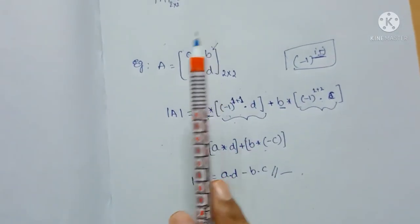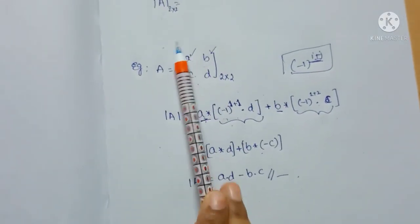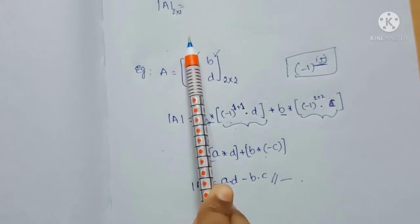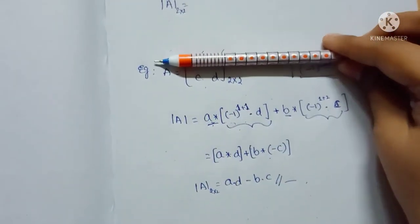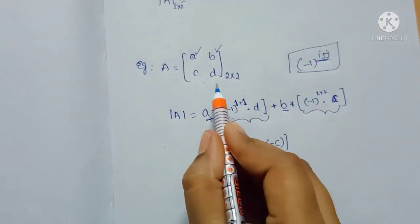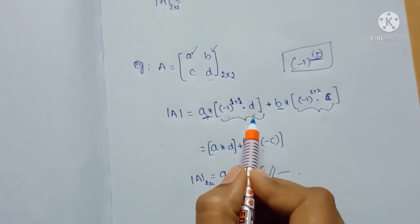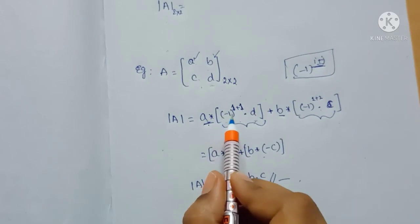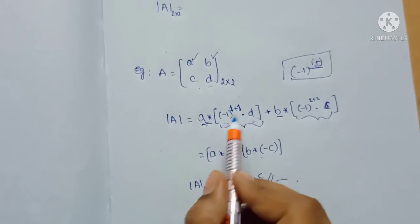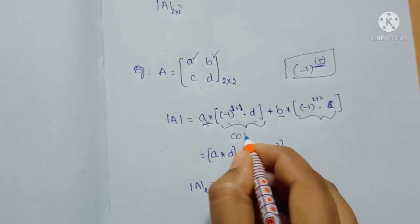If you close that corresponding column and corresponding row, then the remaining element D is the minor of A. If you multiply with minus 1 to the power I plus J, then you get the cofactor matrix.